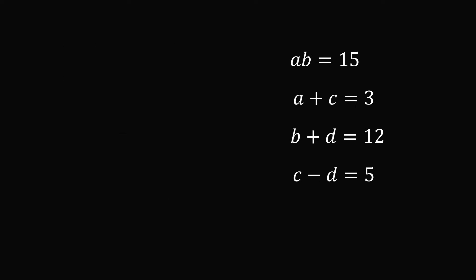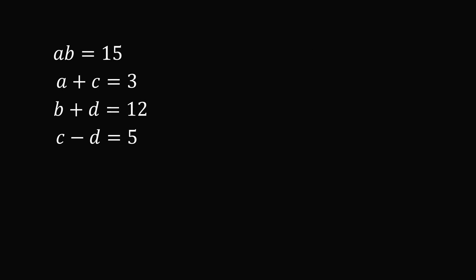We have now transformed this visual puzzle into a system of four equations in four variables. Let's just focus on these four equations. We will systematically solve for each variable. So, how do we get started? When I examine a system of equations, I try to identify any variable that I can easily eliminate.